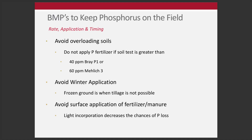Next week we'll get into water quality with Greg LaBarge and the phosphorus risk index with Libby Dayton. To close, here are some BMPs to keep phosphorus on the field. BMPs — best management practices — are rules of thumb for mitigating phosphorus loss to surface waters. First, avoid overloading soil: if the soil doesn't need phosphorus fertilizer or manure, don't apply it. Don't apply fertilizer if soil test levels are greater than 40 Bray or 60 Mehlich — those numbers are even generous.